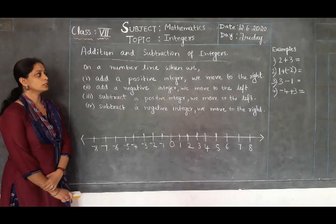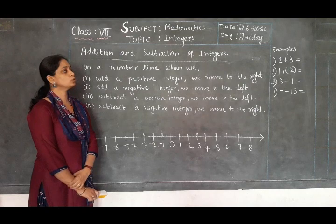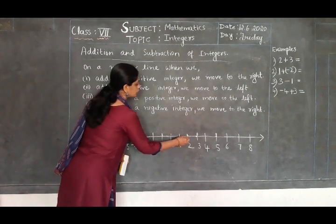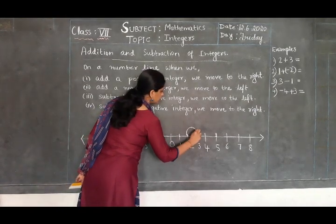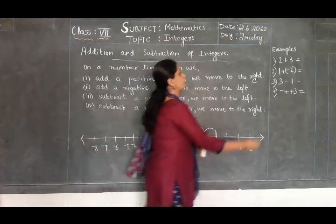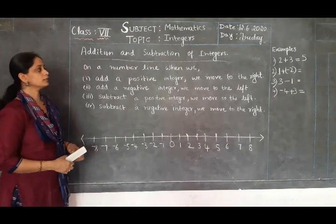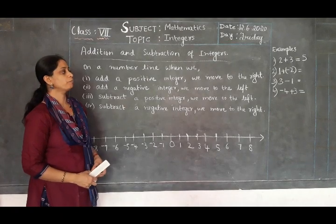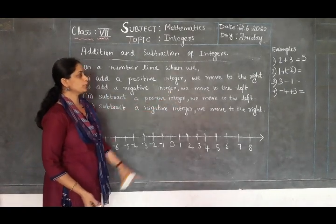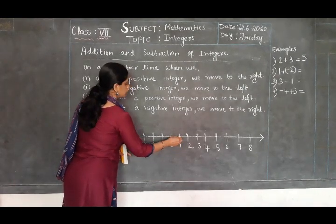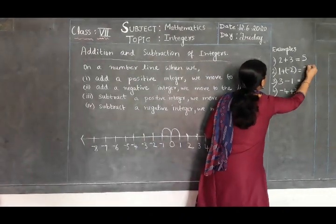Let us now take examples. First example: 2 plus 3 — two positive integers. On the number line, 2 is here. We move three steps to the right: 1, 2, 3. The answer is 5. So 2 plus 3 equals 5. Second example: 1 plus minus 3. Since we are adding a negative integer, we move to the left. Starting from 1, we move three steps to the left. The answer is minus 2. We get the integer minus 2.